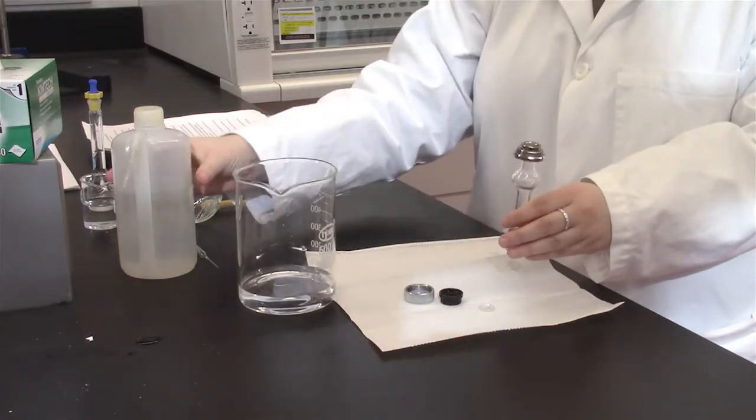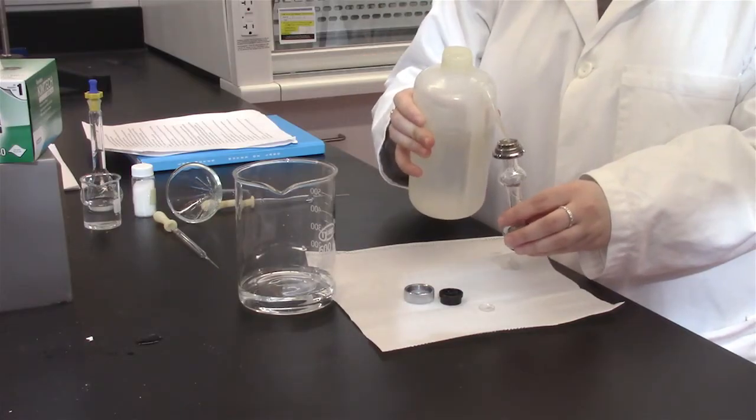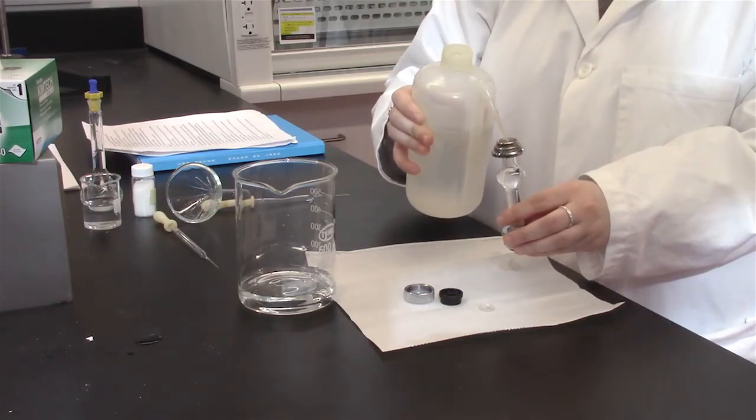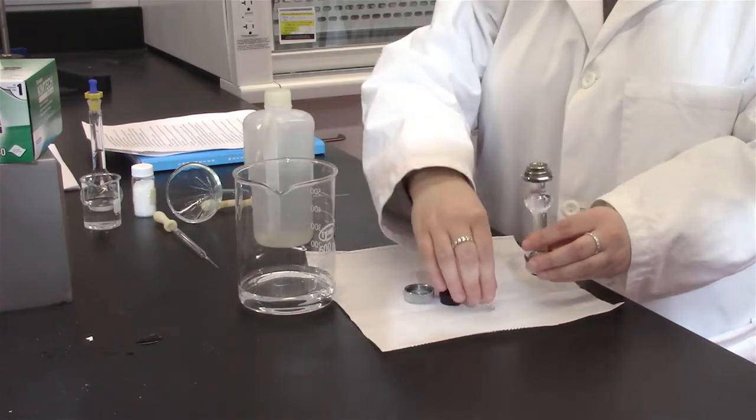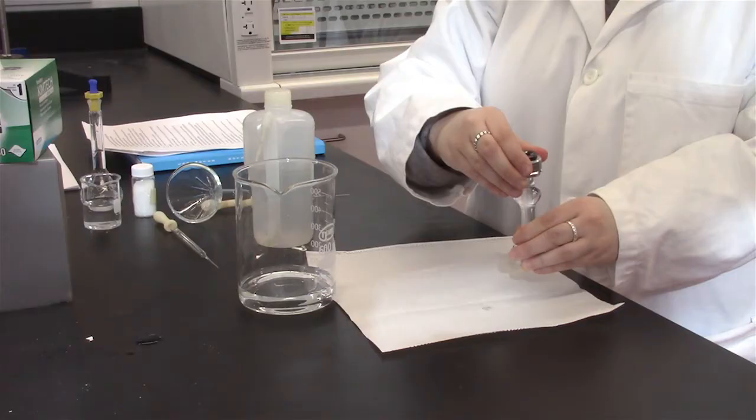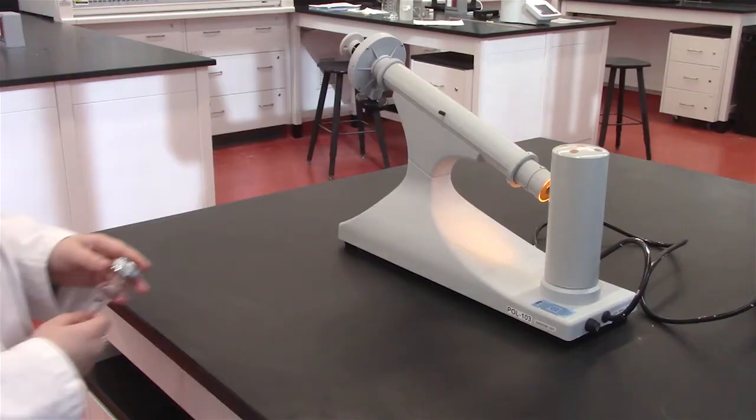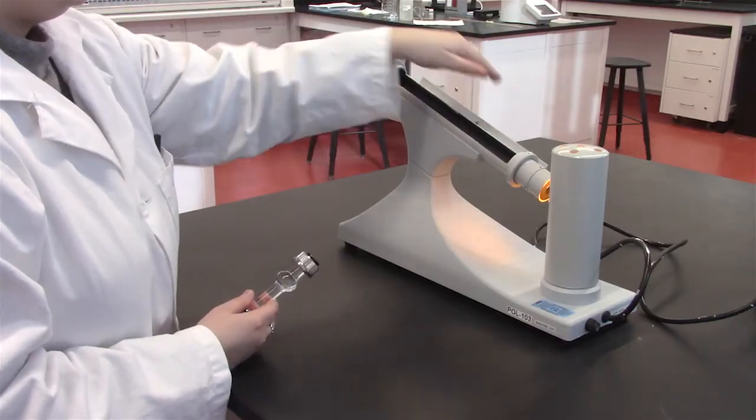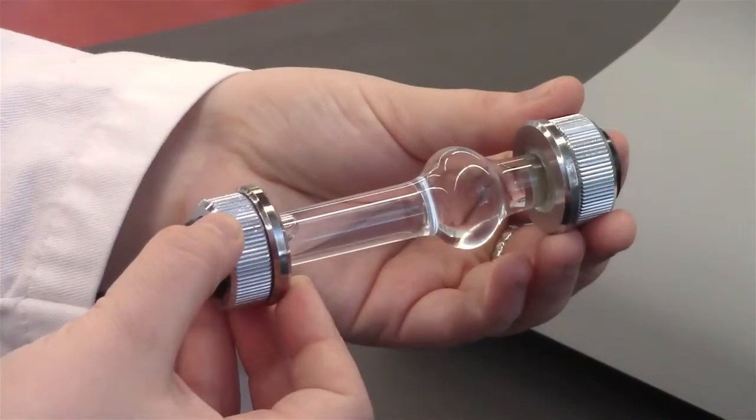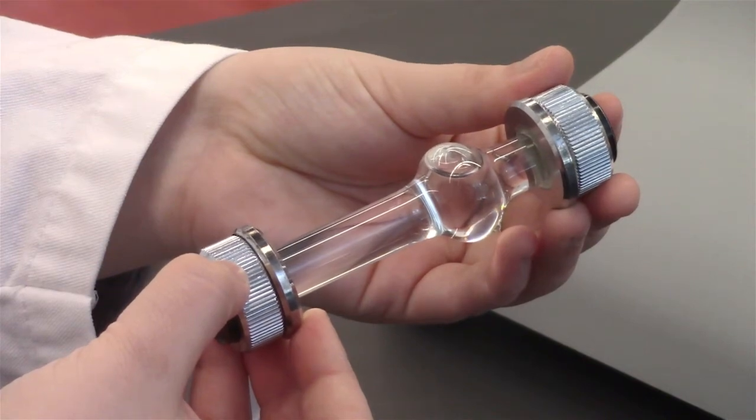Next, use deionized water to calibrate the machine. To do this, fill the sample holder to the top with deionized water and ensure no bubbles are present. If there are bubbles present, tilt the sample holder to ensure the bubbles are in the curved part of the holder and not in the top or bottom of the sample holder.